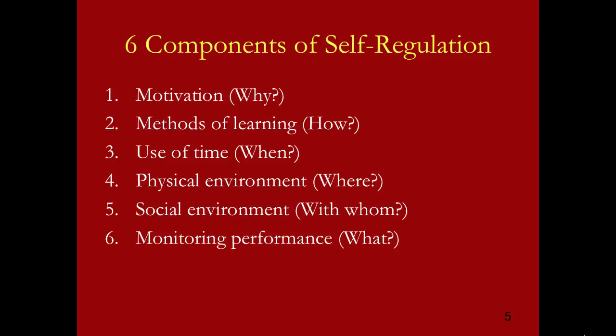Each of these areas is crucial in becoming a self-regulated student. The relationship between the components is multiplicative, meaning if one of these is zero, the learner is not self-regulated at all. Learners need to be efficient in all six components in order to successfully regulate their learning.